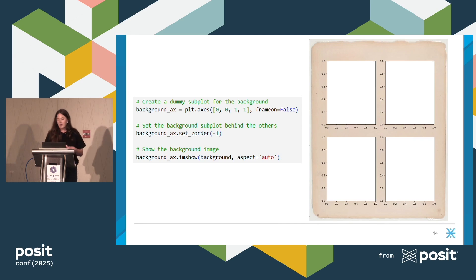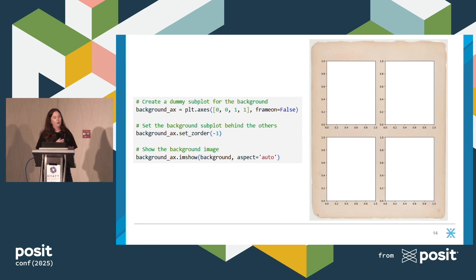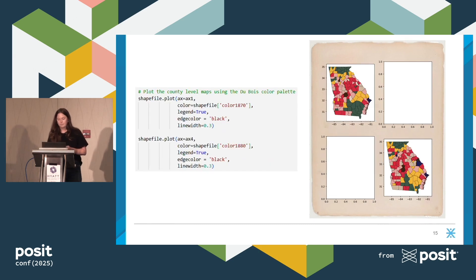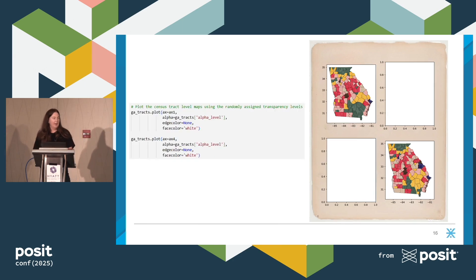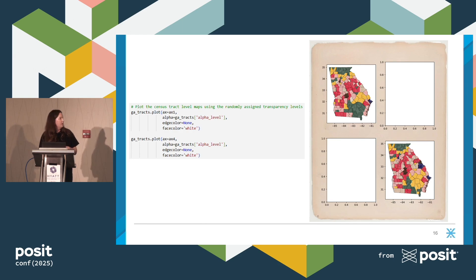Next, we define another axis for the entire figure, telling Python to set the overall axis behind the subplots and to show the background image. Then we plot our graphs in axes one and four, taking our shapefile data and filling in each county with the hex codes defined earlier, adding a very thin black border around each county. We then add the shading by plotting Georgia census tracts over the current maps using randomized alpha levels for transparency, with edge color set to none so there are no visible borders around the census tracts — only around the counties.